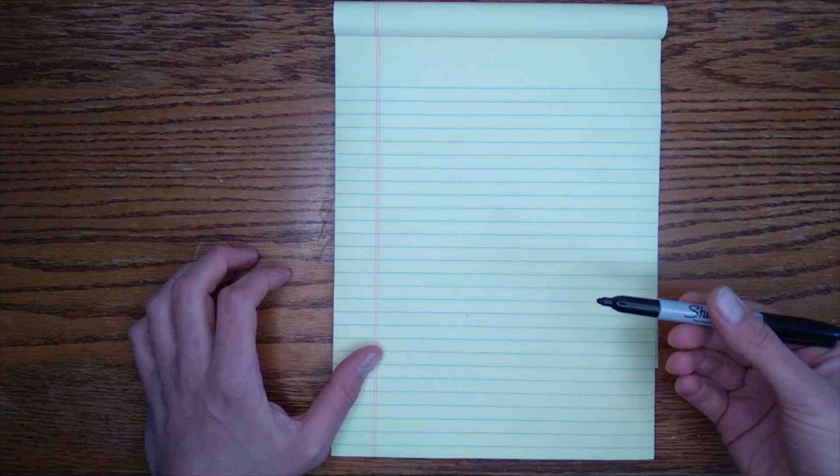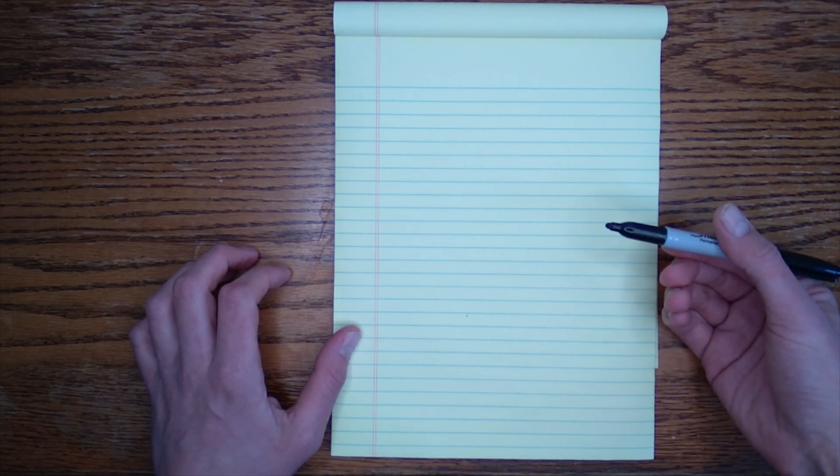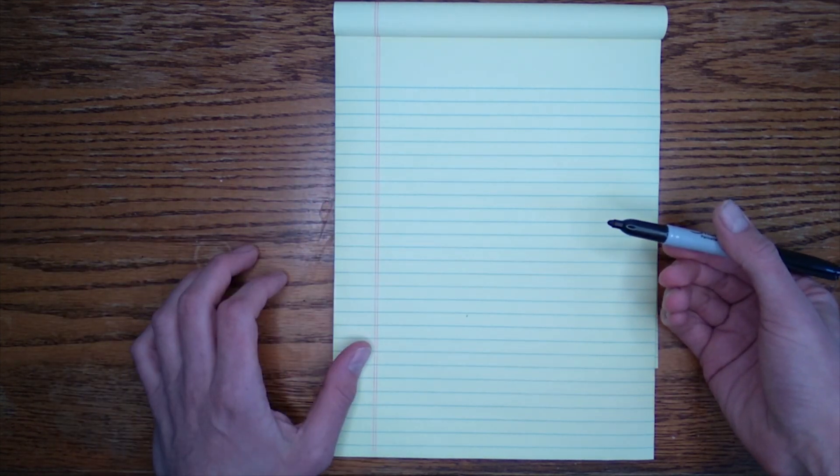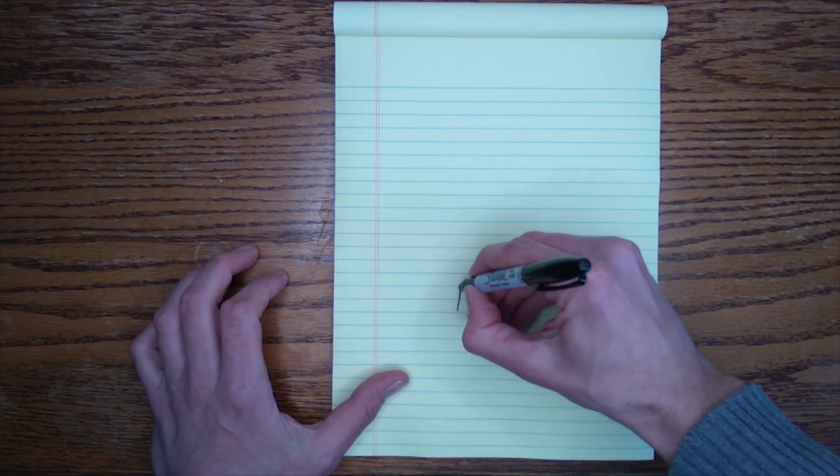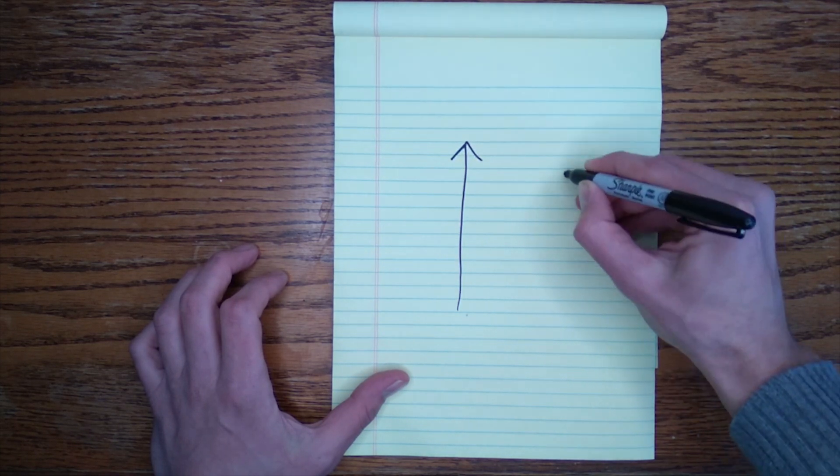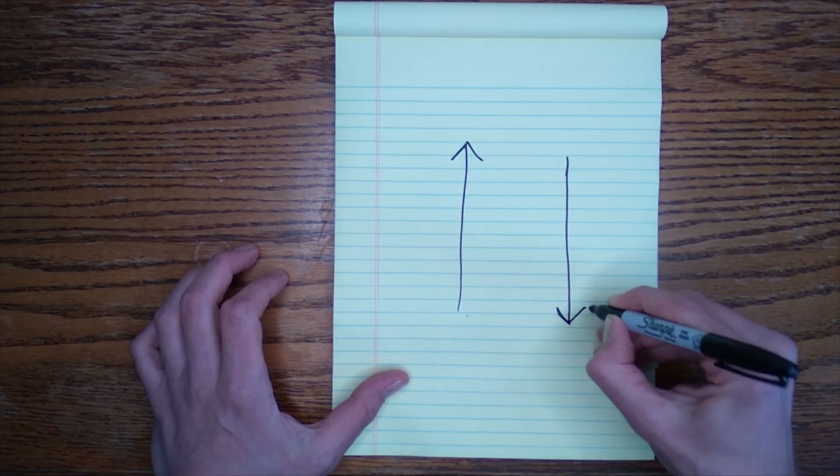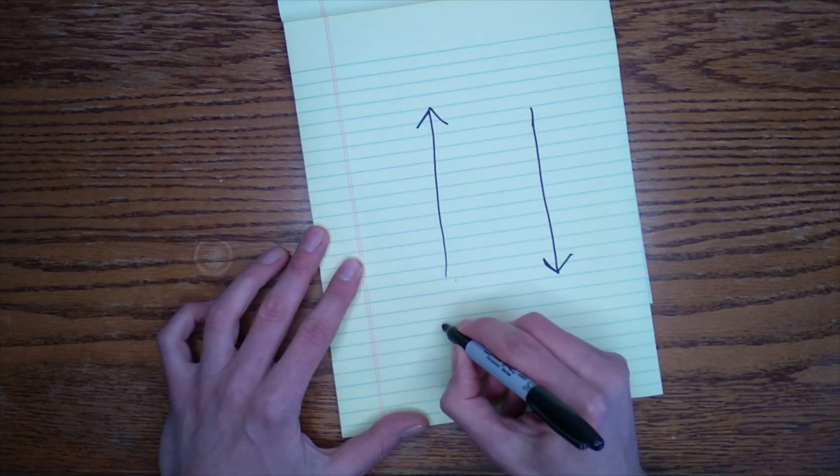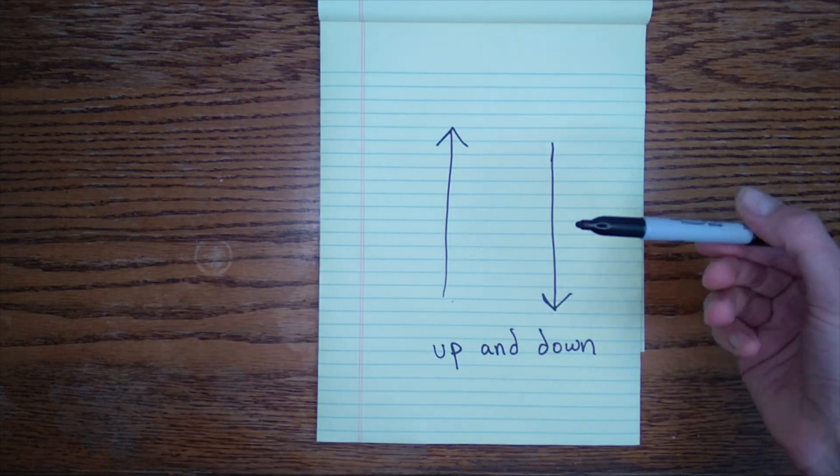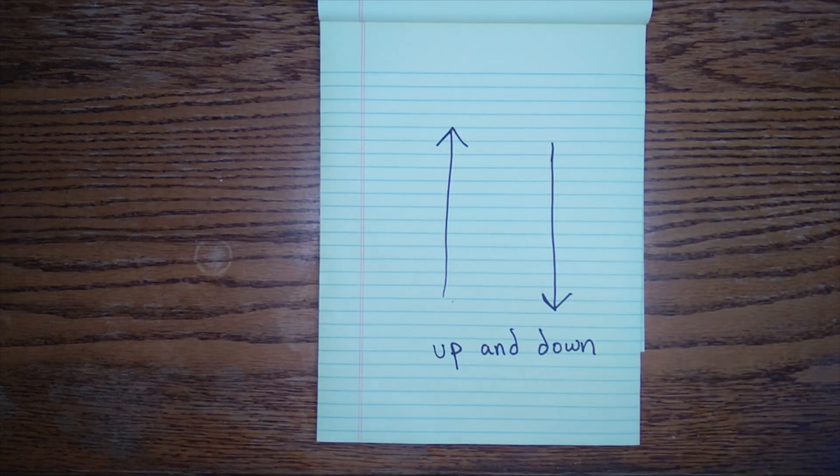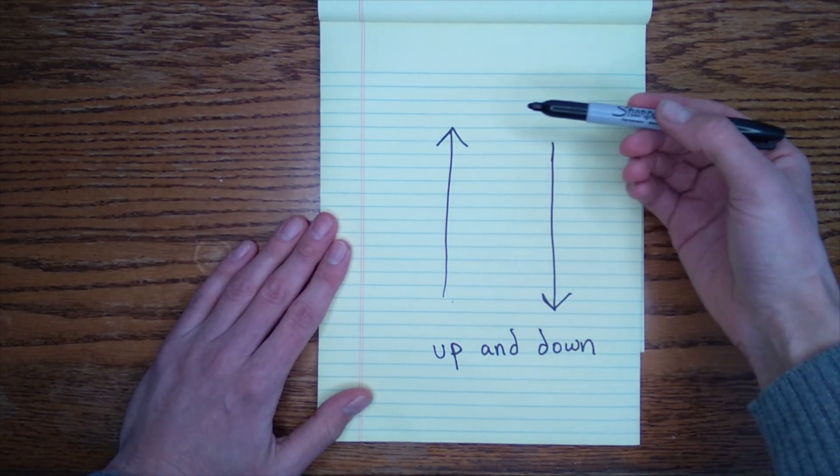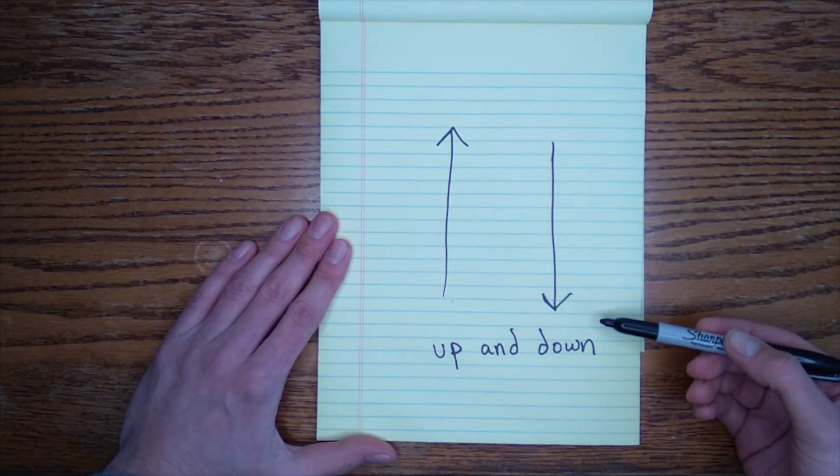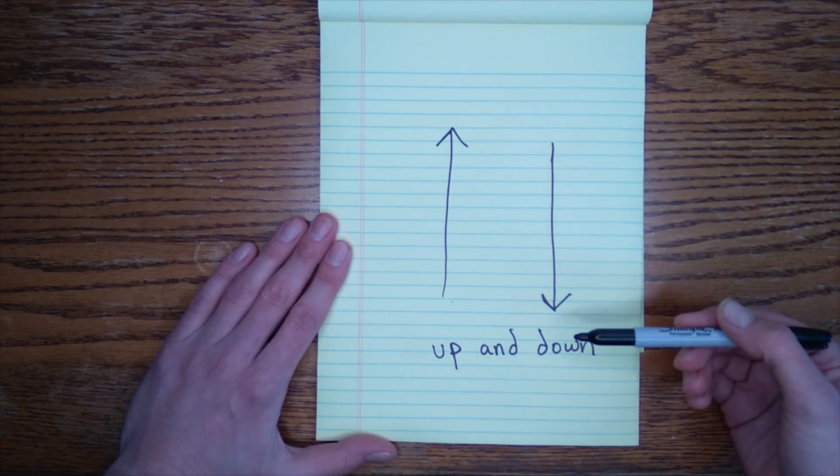First thing I'm going to do is draw a way to represent five different patterns of motion. The first one is one we just talked about. Up and down. This is also a perfect example of Newton's third law of motion. Every action has an equal and opposite reaction. Or when you dribble the ball down, it's going to bounce back up.